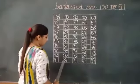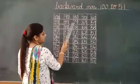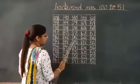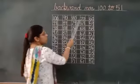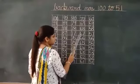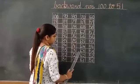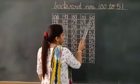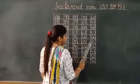Now which number will come before 81? 80, 79, 78, 77, 76, 75, 74, 73, 72, 71, 70, 69, 68, 67, 66, 65, 64, 63, 62, 61. Then 60, 59, 58, 57, 56, 55, 54.